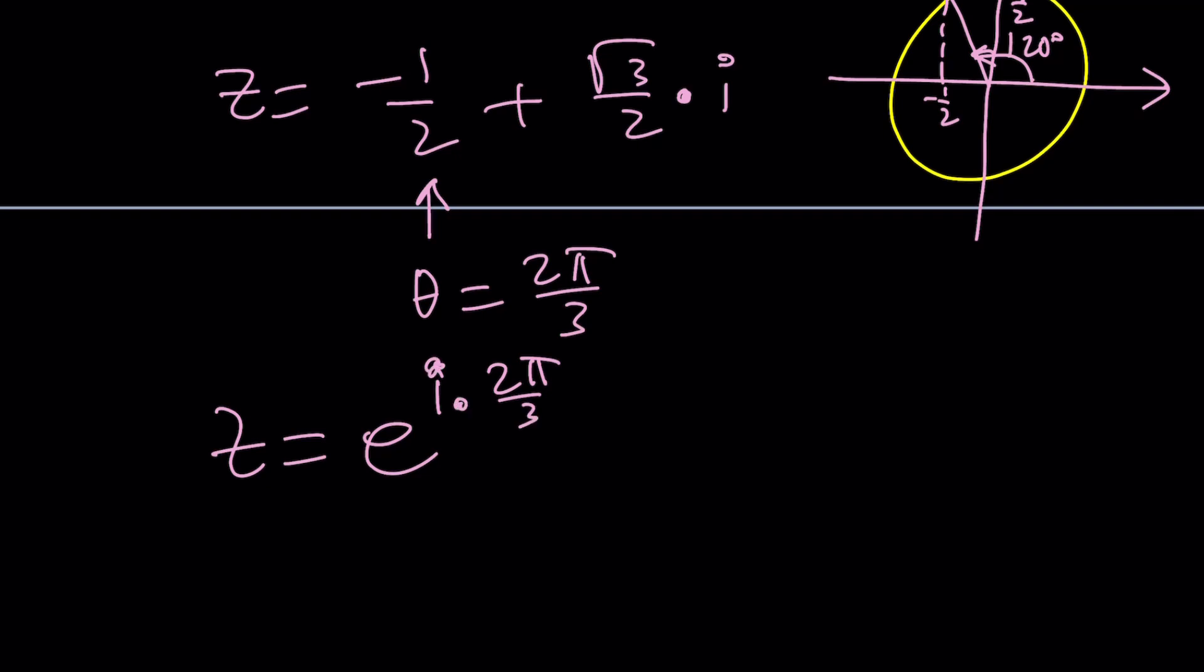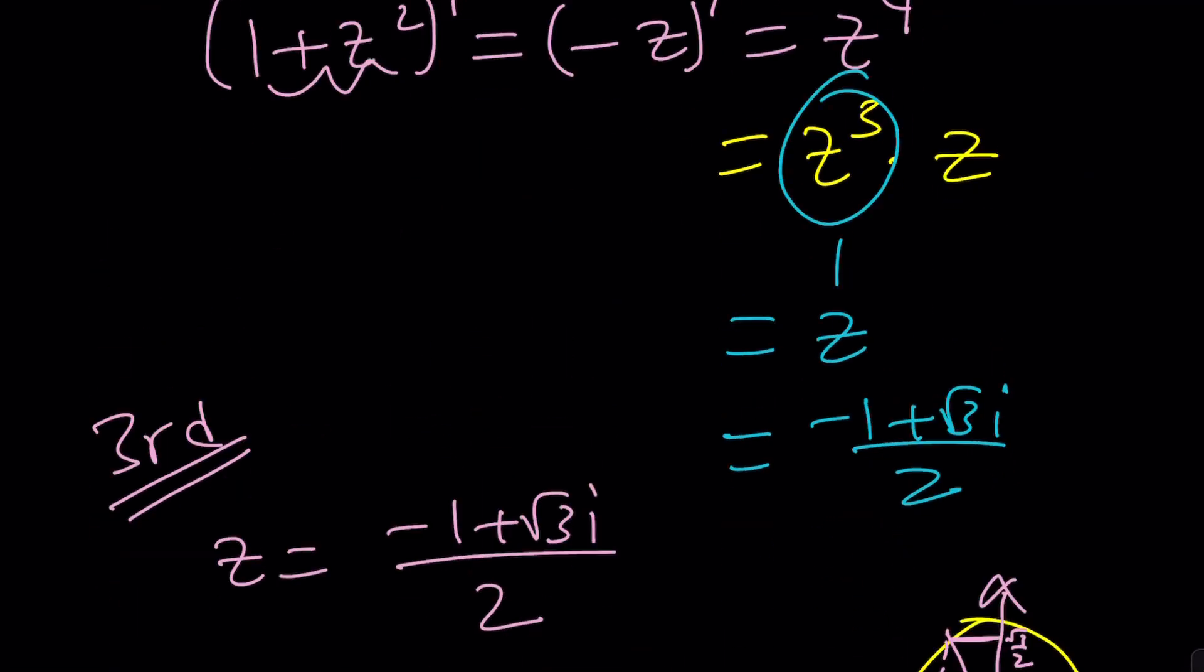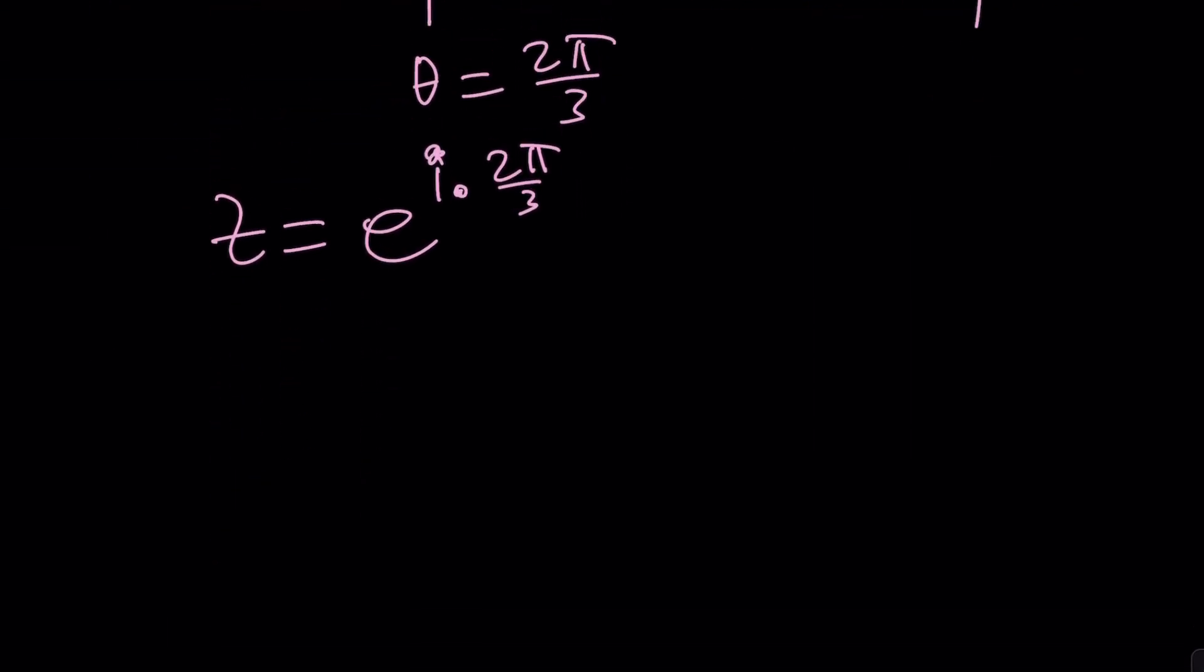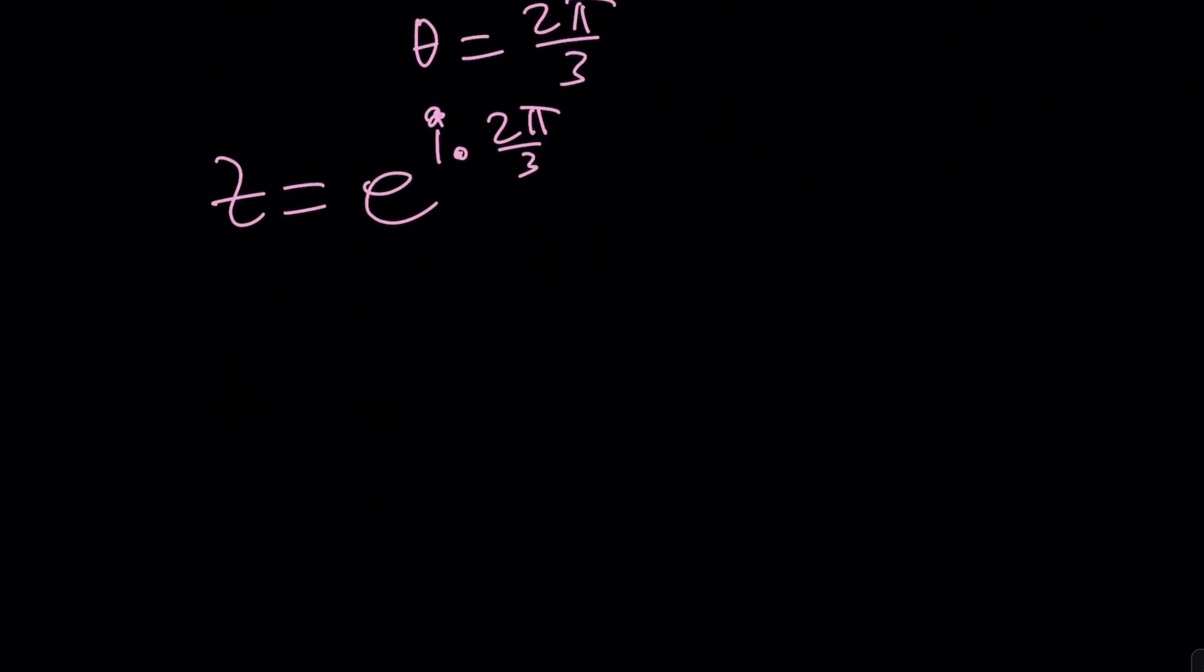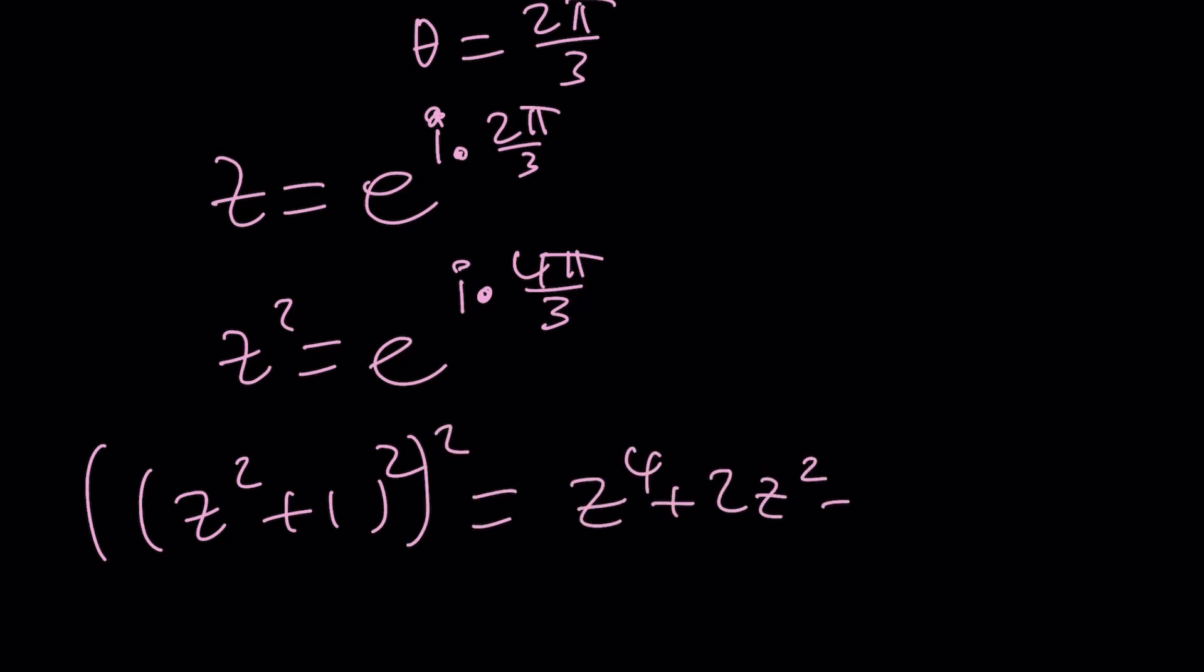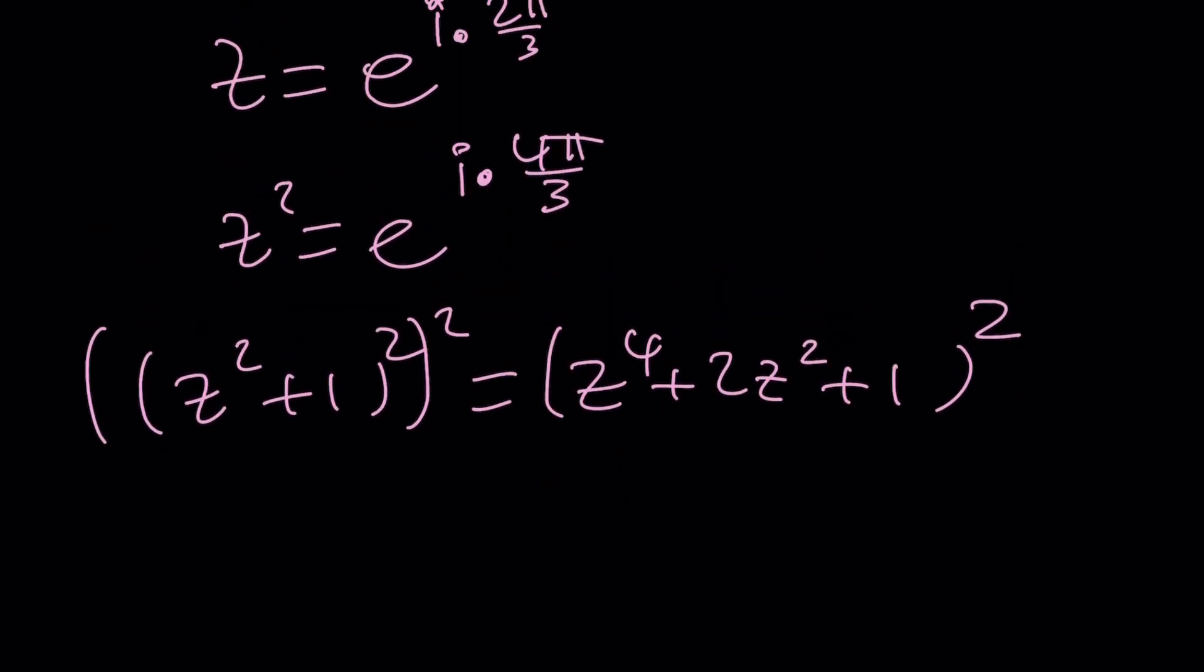So from here we can write z as e to the power i times 2 pi over 3. I was able to write in polar form. And what am I going to do with this? Raise it to the second power, add 1, and then raise it to the fourth power. Now if you raise it to the second power you're going to get e to the power i times 4 pi over 3. Here's the crazy part. If you add 1 to it what are you going to do with that? There's a couple ways to go about it. You could do it but let me tell you something. You could also go off of this. Let's square this and then square one more time. This gives us z to the fourth plus 2z squared plus 1, and then we're going to square the whole thing.